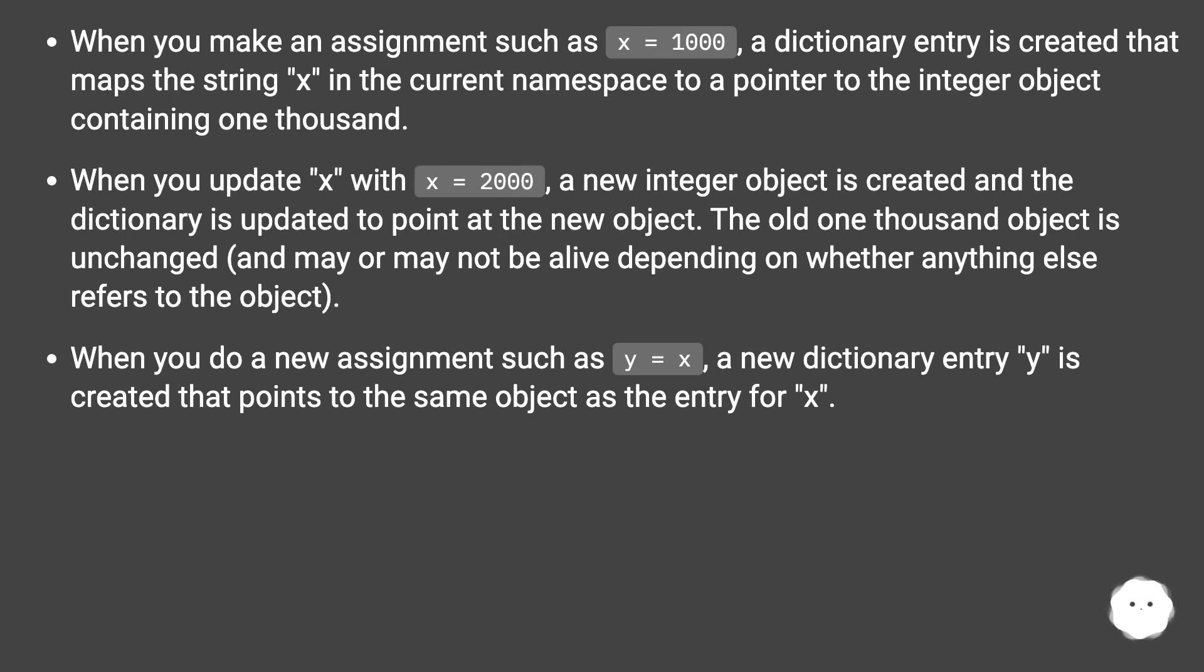When you update x with x equals 2000, a new integer object is created and the dictionary is updated to point at the new object. The old 1000 object is unchanged and may or may not be alive depending on whether anything else refers to the object.